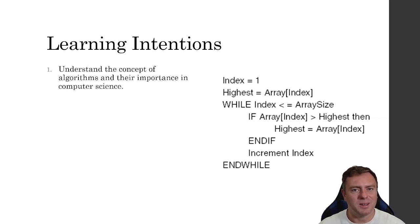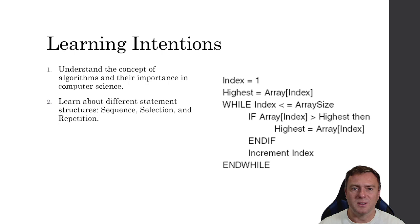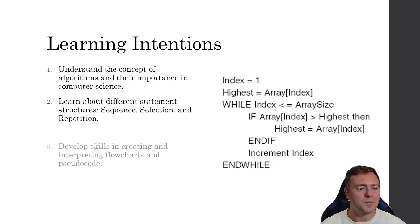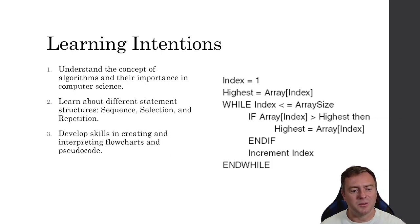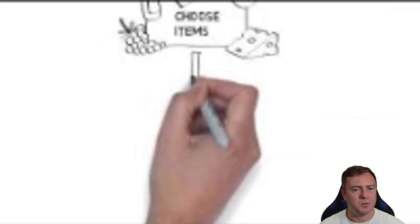The learning intentions that we have today is understanding the concept of an algorithm and their importance inside of computer science. We're going to learn about the different statement structures: sequence, selection, repetition and how that looks with a flowchart and a pseudocode. And then we're going to develop some skills in creating and interpreting flowcharts and the pseudocode that we've learned. And then right at the end I'm going to teach you about the divide and conquer method for problem solving.